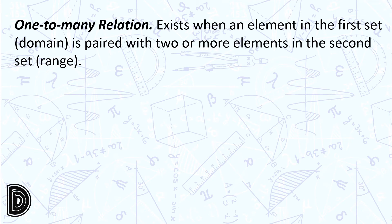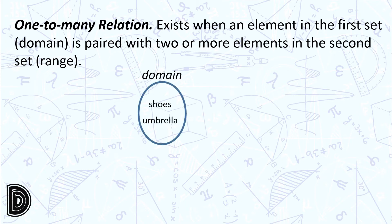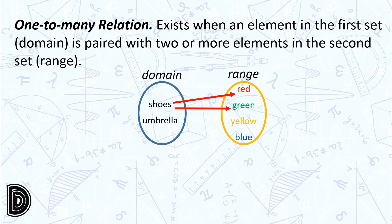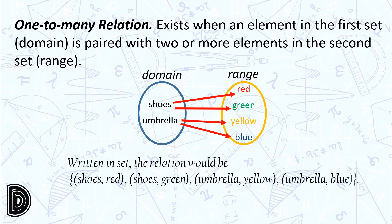A one-to-many relation exists when an element in the first set is paired with two or more elements in the second set. For the first set, let's say we have the elements shoes and umbrella, and for the second set, we have the elements red, green, yellow, blue. Shoes is paired with red and also with green, while umbrella is paired with yellow and also with blue.